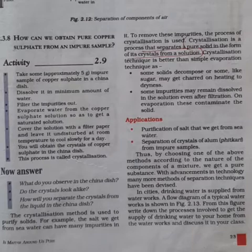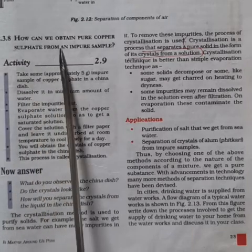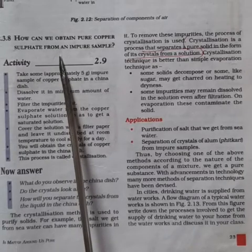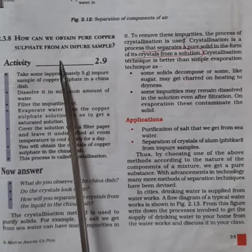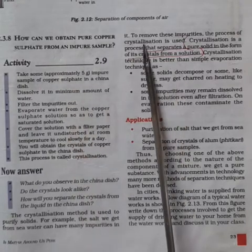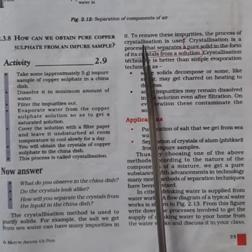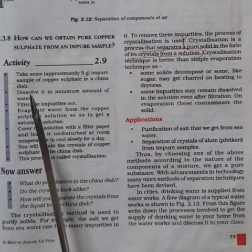Now let us study how we can obtain pure copper sulfate from an impure sample. To obtain crystals of pure copper sulfate salt from an impure sample, we can choose the method of crystallization. For this method we require impure sample of copper sulfate, beaker, china dish, and glass rod.